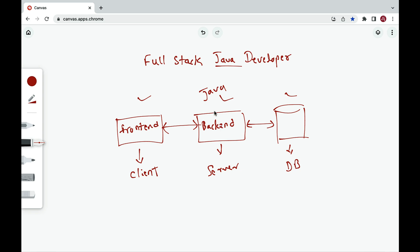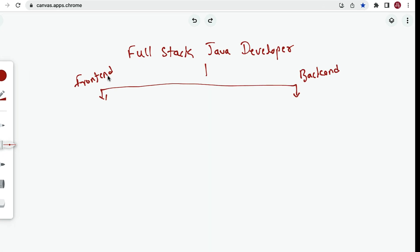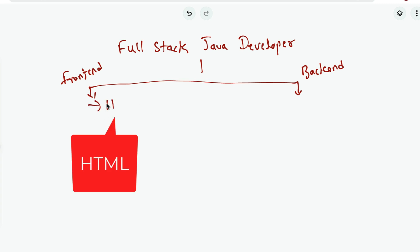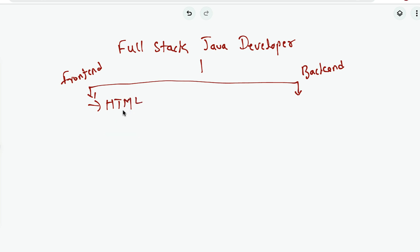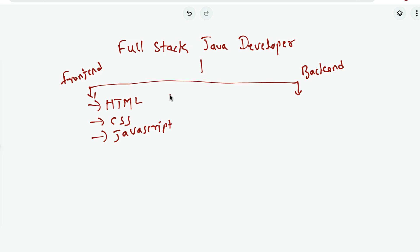A full stack Java developer is the one who can work on both front end and back end using Java, and also has to know about the database. Now let's see what tools and technologies a full stack Java developer has to know. To work on front end application development, first of all you need to know HTML, then CSS, and then JavaScript. These are the web fundamentals you need to know in order to work on front end development.